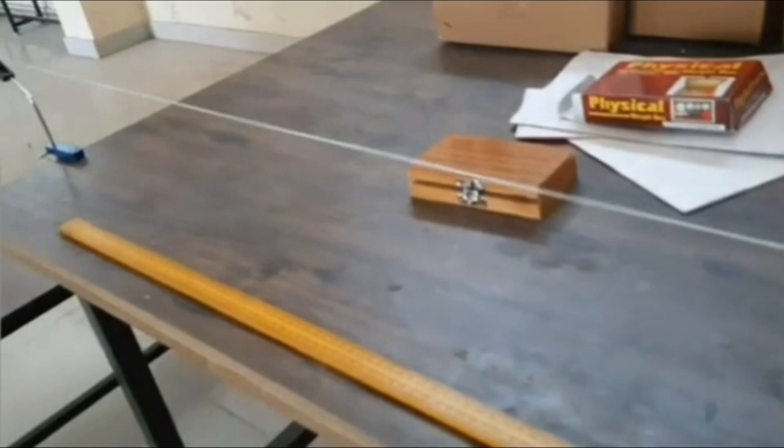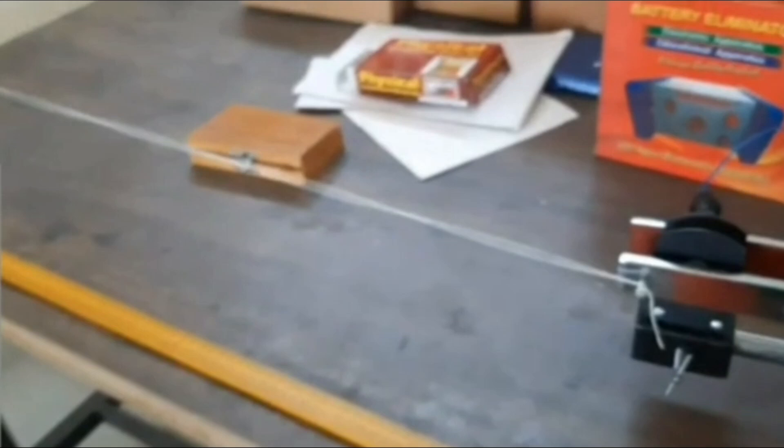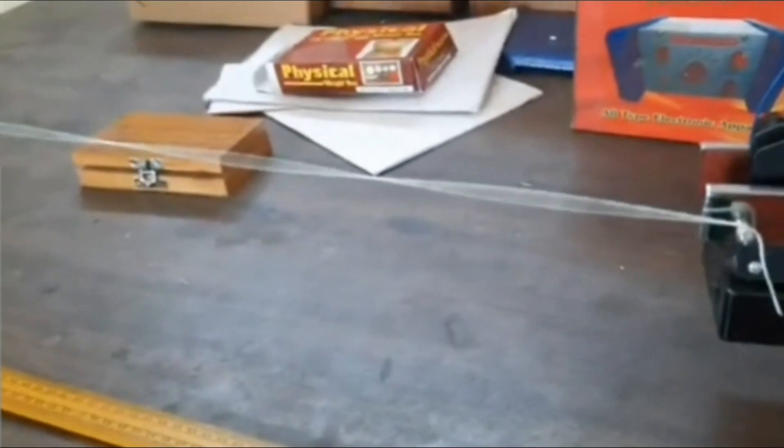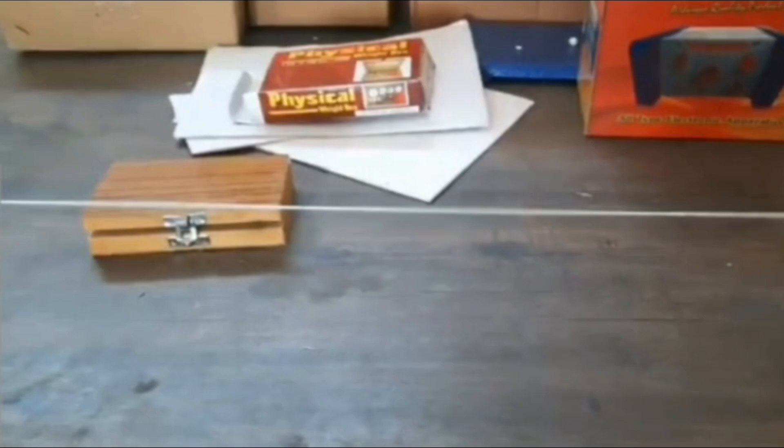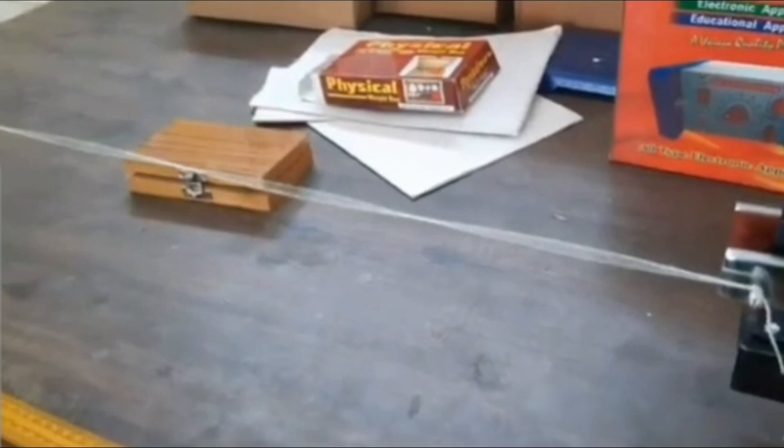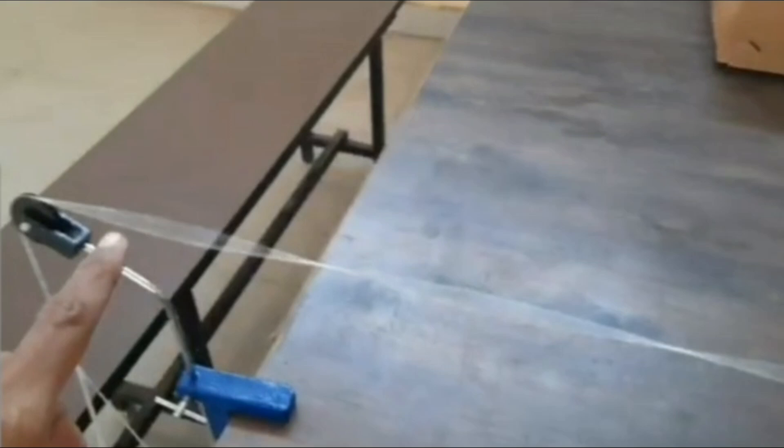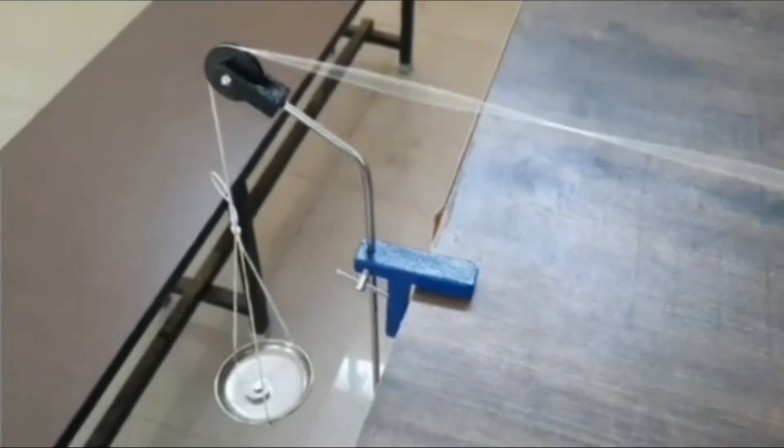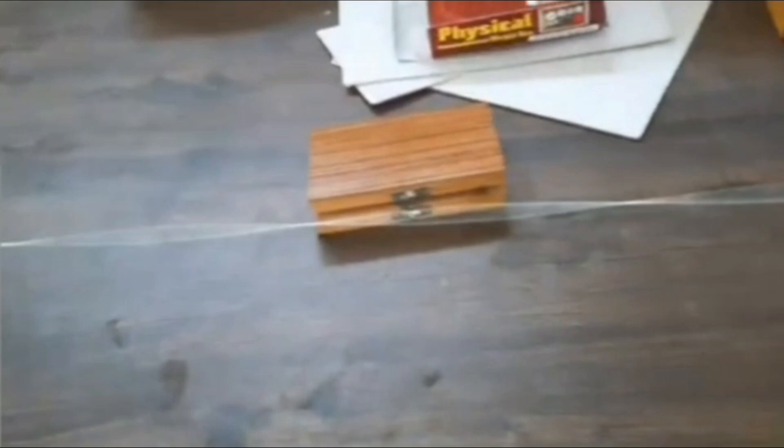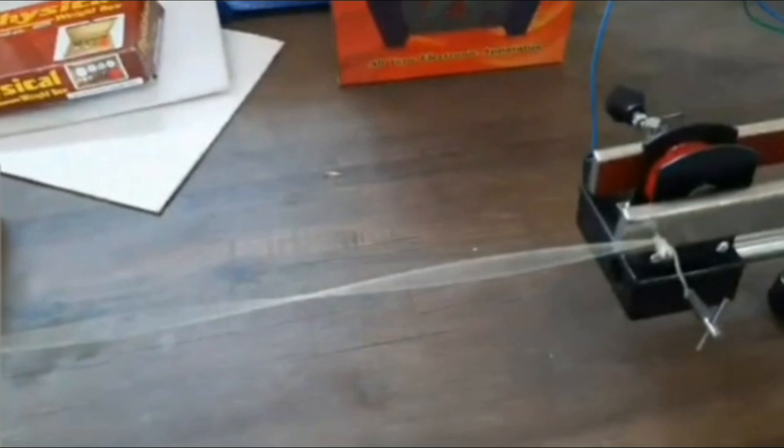You can see the vibrations and the number of loops. Here we can see the number of loops for the weight of 10 grams. Like that you should measure the number of loops for the applied mass in this weight pan. This is how you can get the loops.